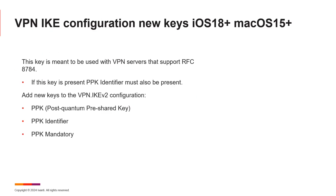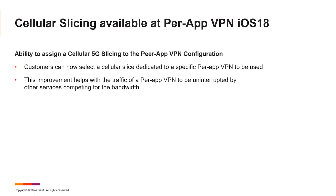Other Q4 features from iOS 18 and macOS 15: the VPN configuration has new keys, including a PPK features identifier and a mandatory field indicator. We also added cellular slicing last year, allowing apps to use a specific cellular slice. Now you can create a per-app VPN for a specific slice as well. Apple is working with carriers to enable very customized usage of bandwidth and traffic handling on 5G networks.